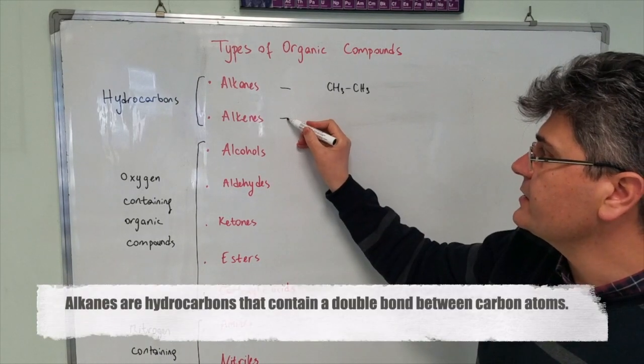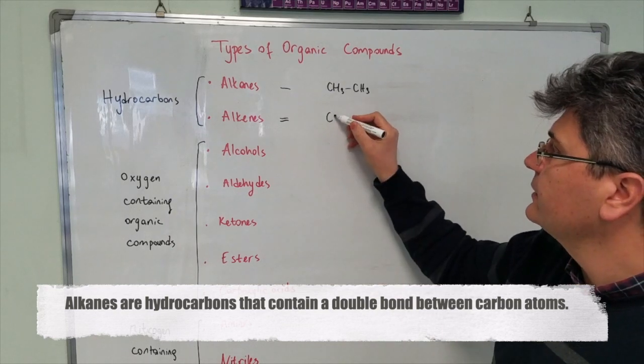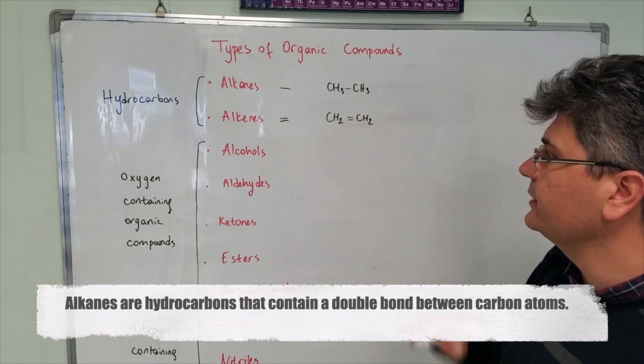However, in the alkenes, we do have a double bond as a functional group. So, it's going to be CH2 double bond CH2.